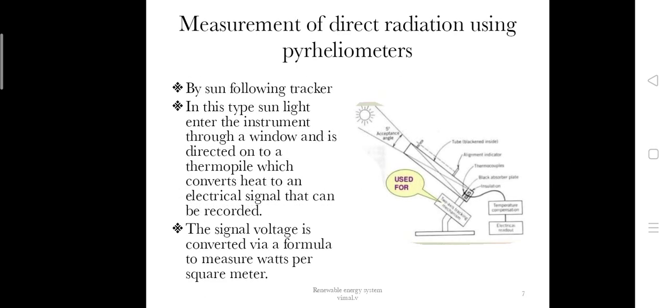First, measuring direct radiation using pyrheliometers: there is a sun-following tracker. In this type, sunlight enters the instrument through a window and is directly absorbed by a thermocouple which converts heat to an electrical signal that can be recorded. This voltage signal is converted via a formula to measure watts per square meter.